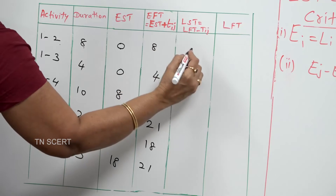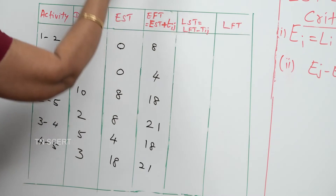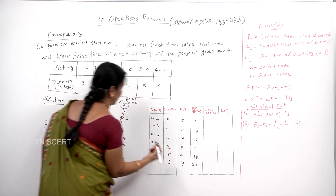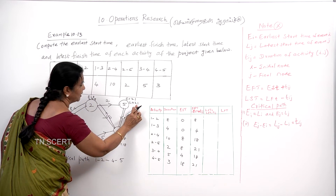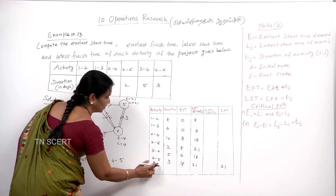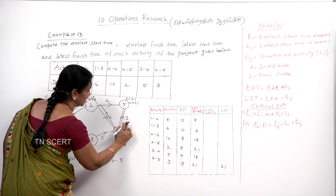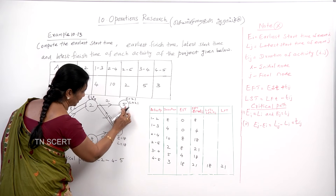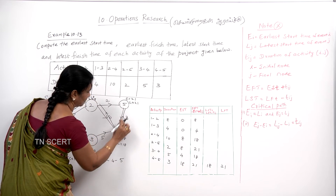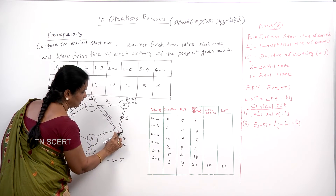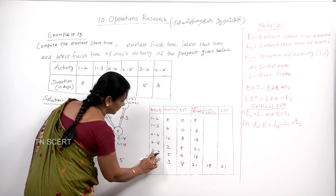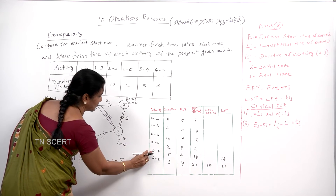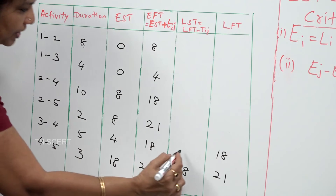EFT is finished. Next, LST — the Latest Start Time — and LFT — the Latest Finish Time. LFT is the latest finish time; LST is the latest start time. Now working backward: node 5 LFT=21. Activity 4→5: we come from 5, LFT=21, duration=3, so LST=18. Activity 2→4: LFT=18, duration=10, so LST=8. Activity 3→4: LFT=18, duration=5, LST=13. Activity 1→3: LFT=13, duration=4, LST=9. Then 18 minus 3 equals 13.